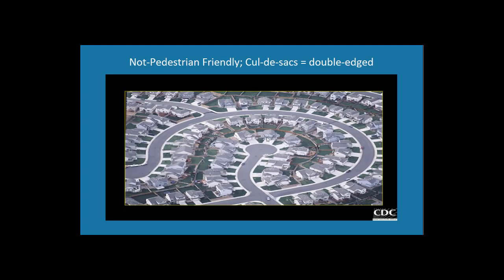Cul-de-sacs are a double-edged thing — people like living on one because there's less traffic, but the more cul-de-sacs you have, the fewer through streets you have. When you do get on a major street, it's got a lot of traffic. You're just pushing traffic from one place to another, and it ends up making it a lot harder for kids or elderly people to get around because they don't have cars. Because of the loopiness of it — some call it 'dead worm design' — if one kid wants to play with another nearby, the lack of connectivity makes that really hard.